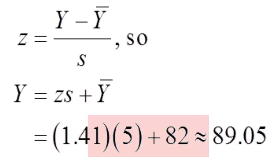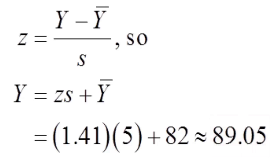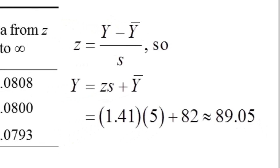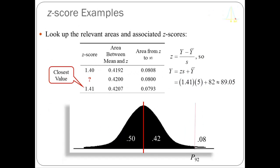We know the formula for Z-score is y minus y-bar divided by the standard deviation of y. Manipulating this algebraically, I can solve for y: y equals z times s plus y-bar. Substituting in: my test score equals 1.41 times 5 plus 82, which gives 89.05. The 92nd percentile is 89.05, meaning people with that score were equal to or greater than 92% of test takers — and 8% of people scored higher. Note that the Z-score formula has four pieces: z, y, y-bar, and s. If you know any three, you can solve for the fourth.